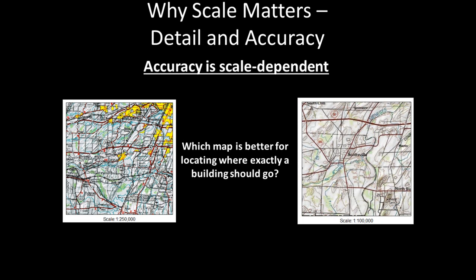Continuing with the disaster management example, another reason why scale matters is that accuracy is scale dependent. For example, if using a paper map or digital source based on a paper map to locate building positions for disaster planning, it is vital that the map is dependable in terms of building locations shown on the map being near where they are actually located, if field verified using precise ground surveying. In fact, the U.S. Geological Survey has long published map standards to ensure vertical and horizontal accuracy of map points.